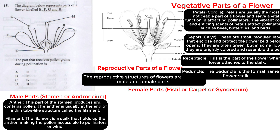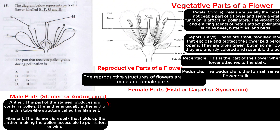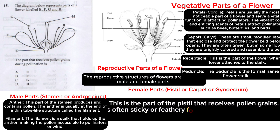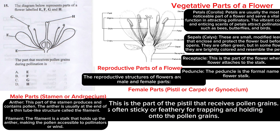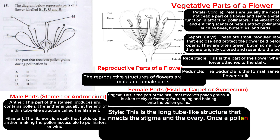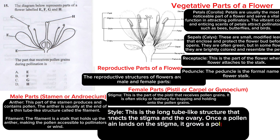The female part of a flower is the pistil, also known as carpel or gynoecium. The stigma is the part of the pistil that receives pollen grains — it is often sticky or feathery for trapping pollen. The style is the long tube-like structure connecting the stigma to the ovary. Once a pollen grain lands on the stigma, it grows a pollen tube down the style to reach the ovary.